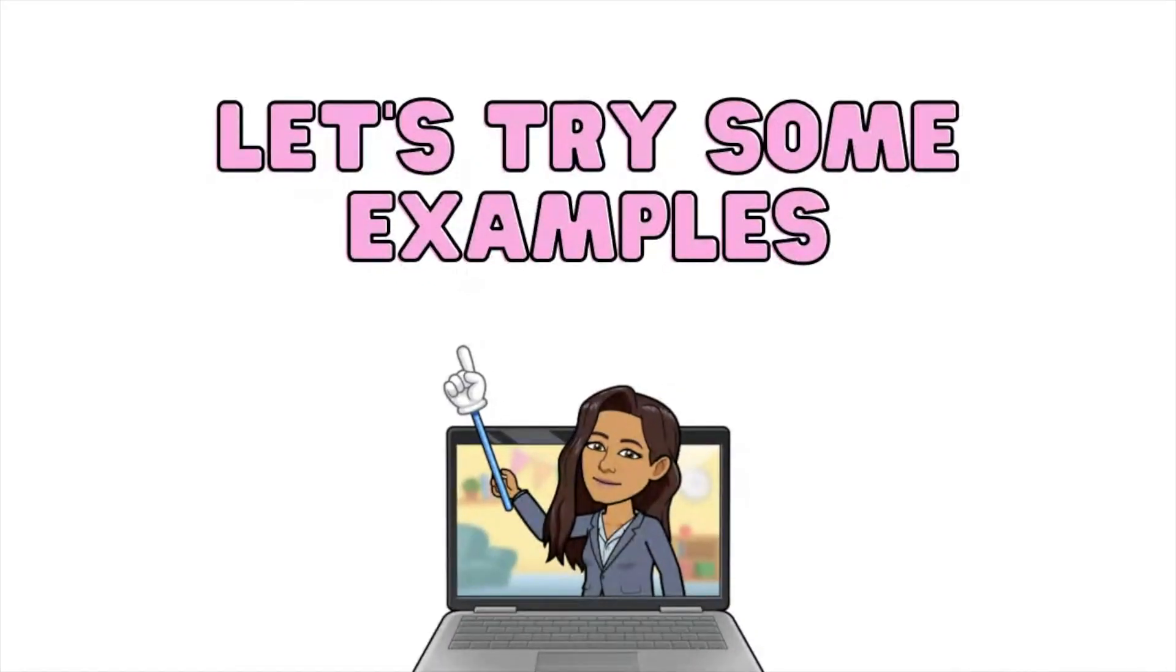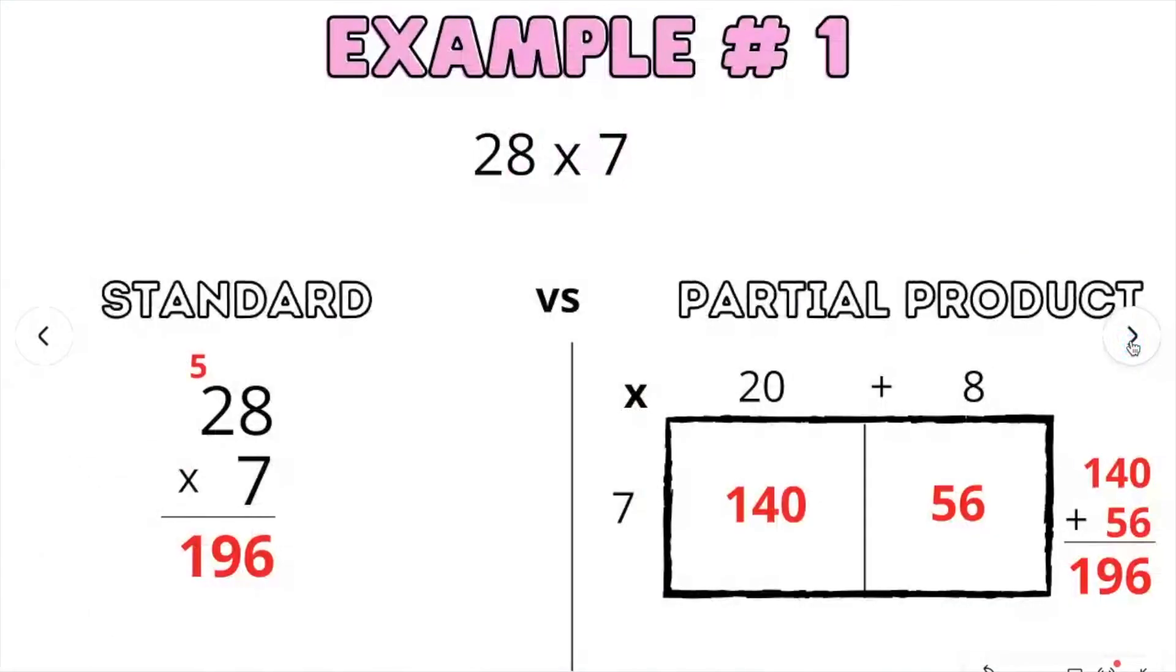Let's try some examples. Example number 1. 28 times 7. The standard algorithm way, we write 28 times 7. We multiply 8 times 7, which is 56. We have our 6 in the ones place, and we carry the 5 in the tens place. We then multiply 7 times 2 is 14, plus 5 is 19. So our answer is 196.